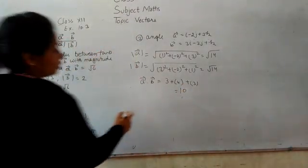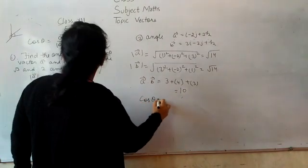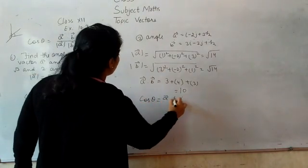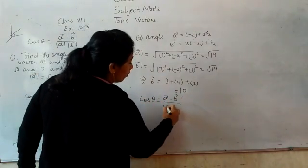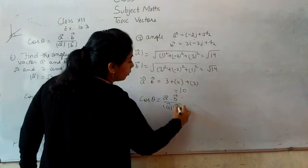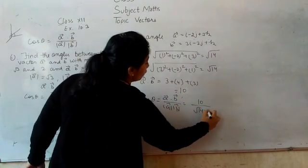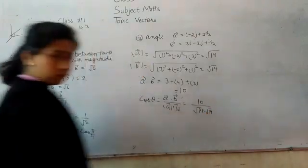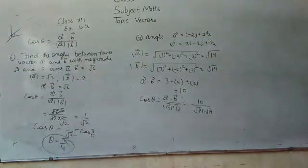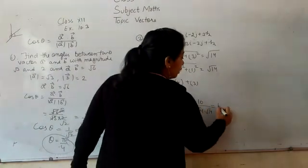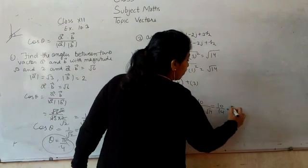Now, put the values in the formula. A dot B upon A mod times B mod. A dot B is 10 upon root 14 times root 14. This means 10 upon root 14 times root 14, so this equals 10 by 14. 10 by 14 simplifies to 5 by 7.